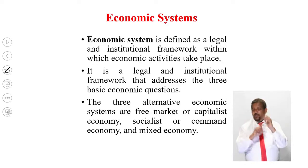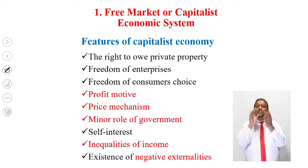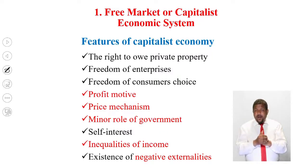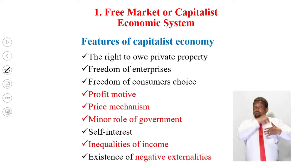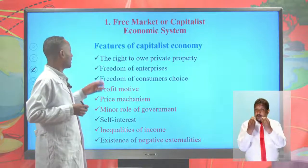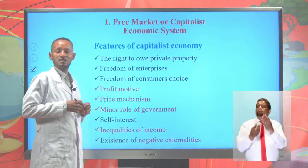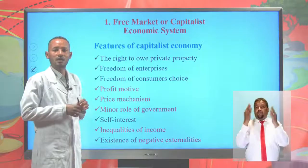The first is the free market or capitalist economic system. Under this system, the major means of production and distribution of resources are mainly controlled and owned by the private sector for the sake of profit. The features of this system include: the right to own private property, and individuals have the right to accumulate wealth. There is no ceiling on capital in the free market or capitalist economic system.